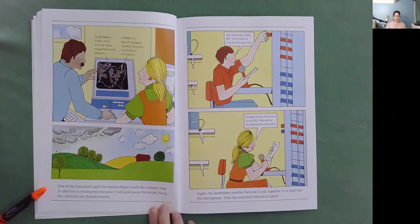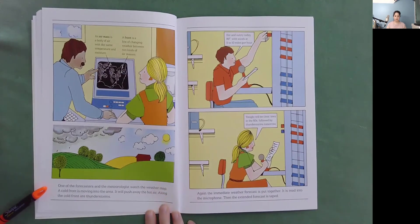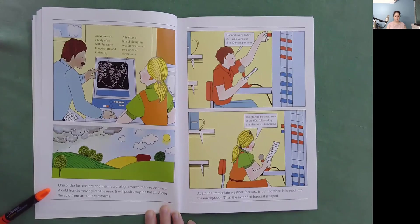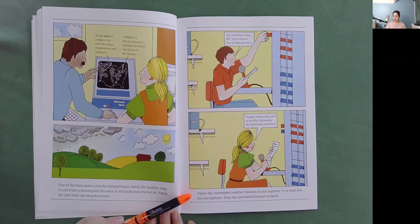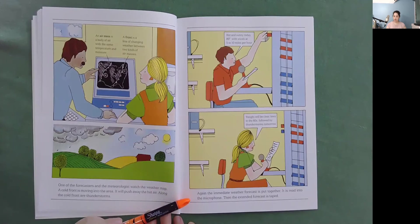One of the forecasters and the meteorologist watch the weather map. A cold front is moving into the area. It will push away the hot air. Along the cold front are thunderstorms. Again, the immediate weather forecast is put together. It is read into the microphone. Then, the extended forecast is taped.